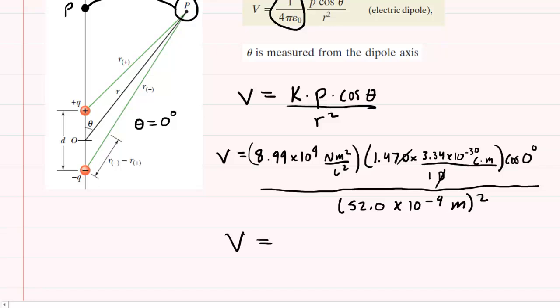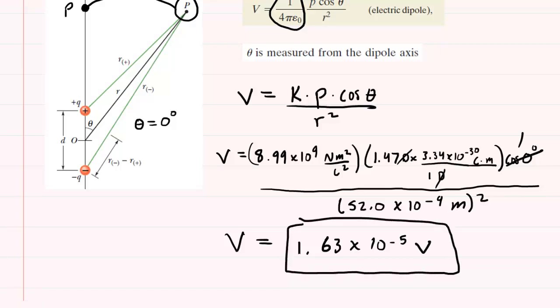You'll go ahead and pick up your calculator. Make sure you are in degree mode, or more simply, the cosine of 0 is just 1, so you don't need to type it in. When you punch this all in, you're going to get about 1.63 times 10 to the minus 5. And of course the standard unit of electric potential is volts. So this would be the correct answer to the question.